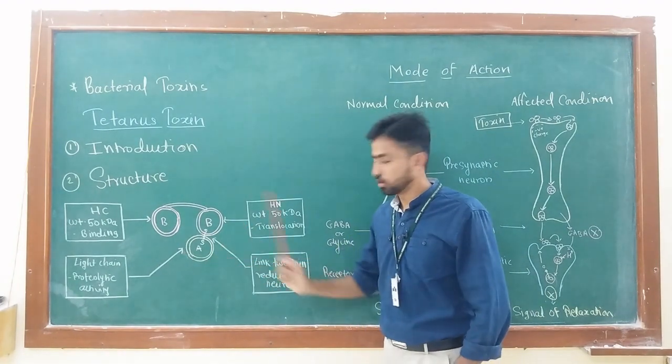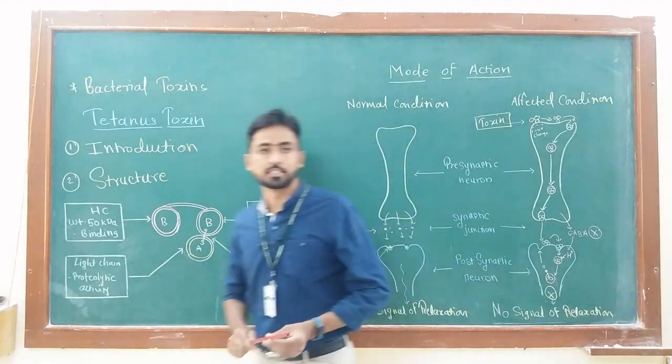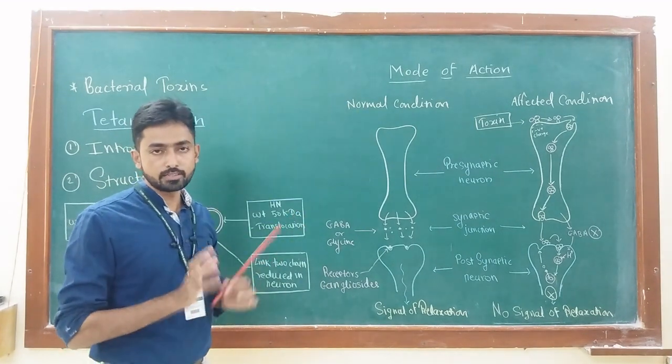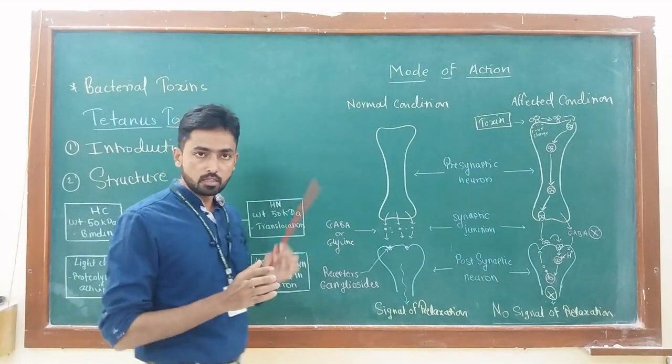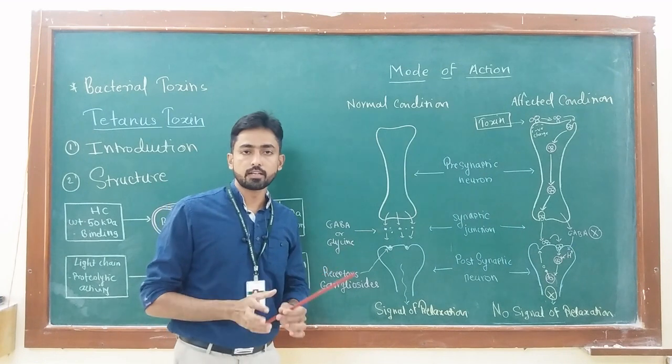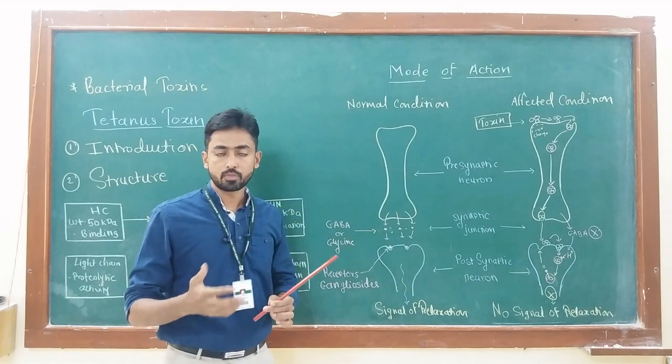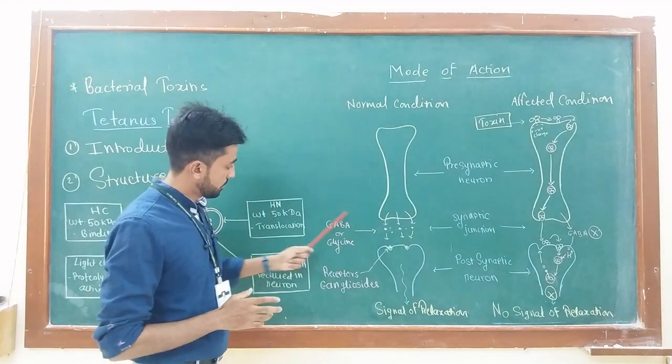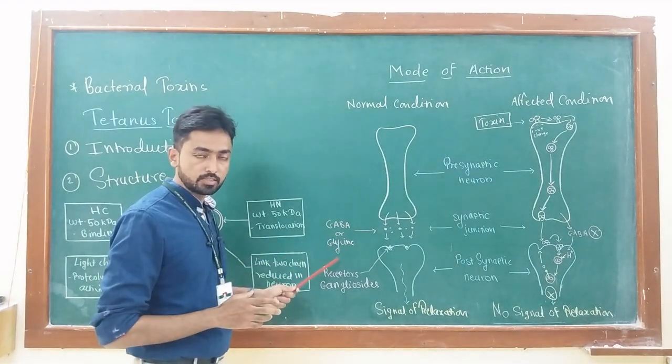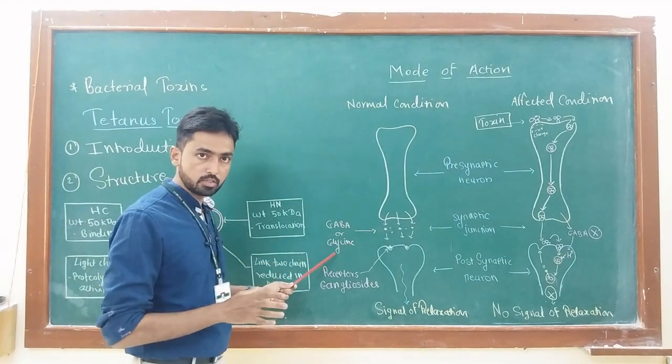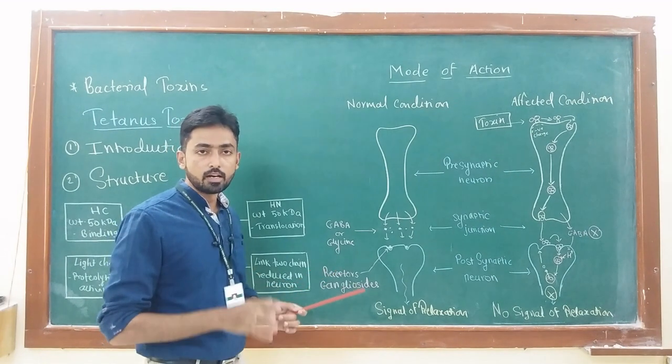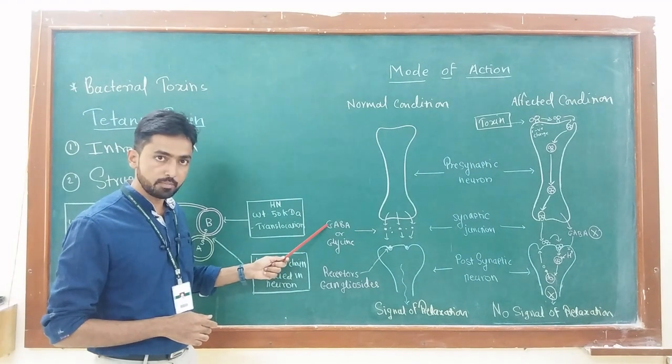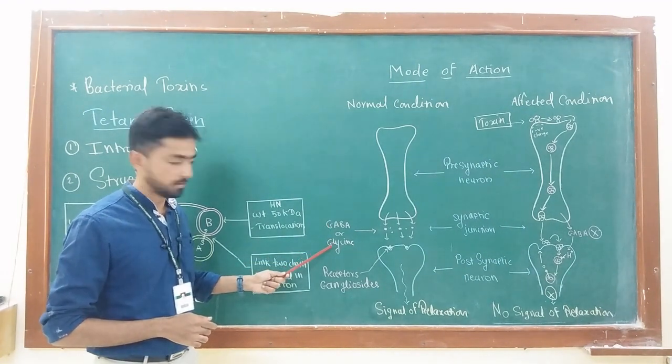Now we are going to focus on the mode of action of this tetanus toxin. Actually in normal condition when toxin is absent in the body, the central nervous system sends signals of relaxation to the muscles by using some inhibitory neurotransmitters. These are the chemicals or transmitters which are responsible for relaxation of the muscles. These inhibitory chemical neurotransmitters include GABA or glycine.